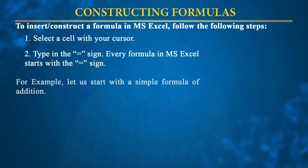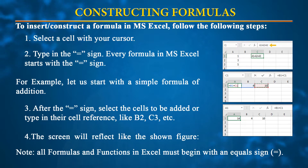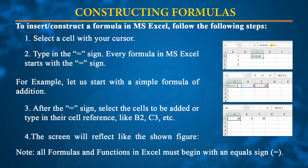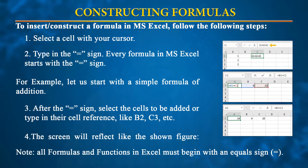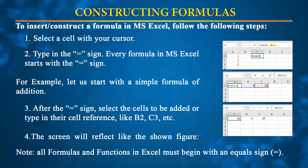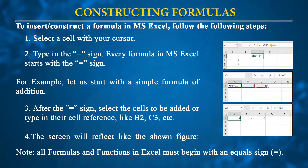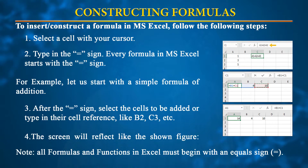When constructing a formula, the first and foremost requirement is to place an equal sign. If an equal sign is not placed, the content will be taken in text format. For example, to add two numbers in B1 and C1 and reflect the result in A1, you select A1, type =B1+C1, or alternatively use =SUM(B1:C1) to get the same answer.